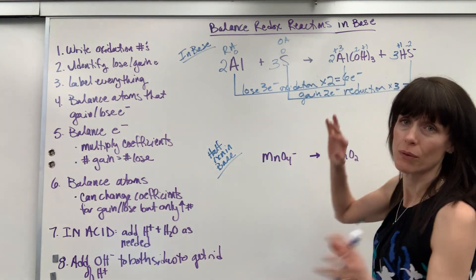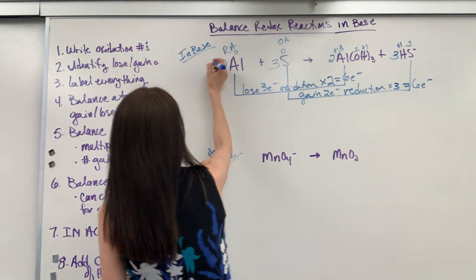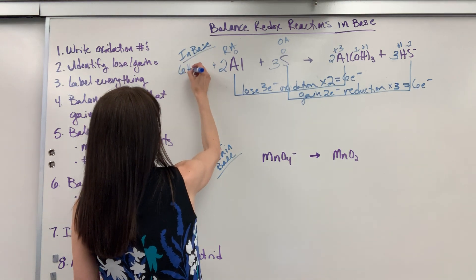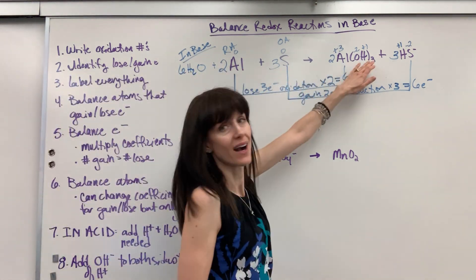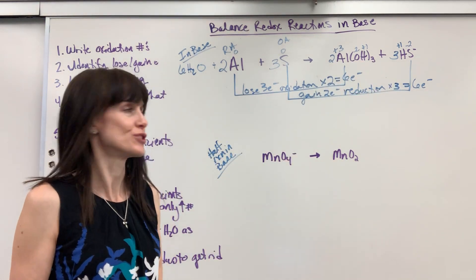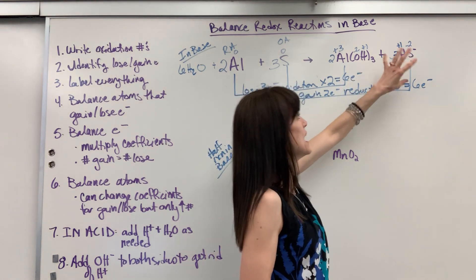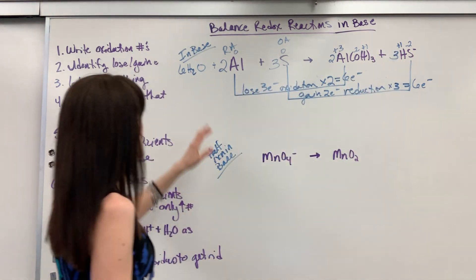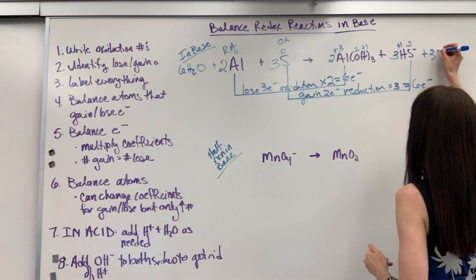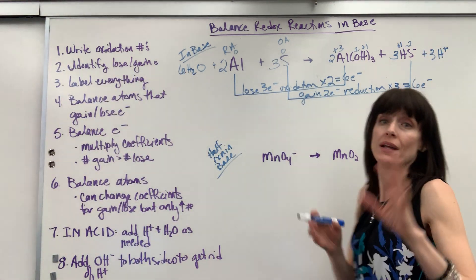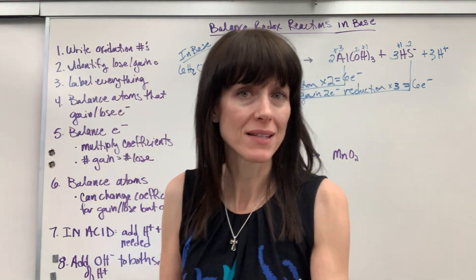Let's count what we have for our oxygens. Two times three is six — I've got six oxygens. So I'm going to add six water molecules. Six oxygen equals six oxygen. Now let's look at hydrogen. Two times three is six hydrogen, plus three, equals nine hydrogen on the reactant side. Six times two is twelve — so I need to add three hydrogen ions. Now if we were balancing an acid, we'd be done.